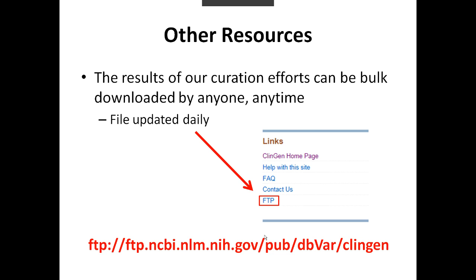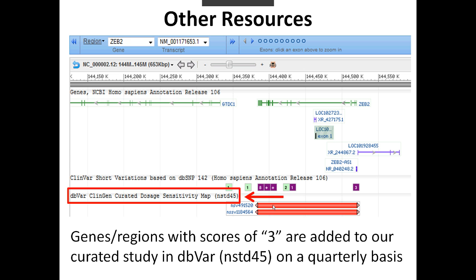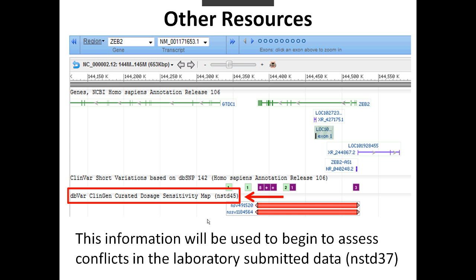This site also contains a link to an FTP site, which is updated daily and includes BED files that you can use in the browser of your choice. Additionally, on a quarterly basis, we take our genes and regions that have been given a score of 3 — either haploinsufficiency or triplosensitivity — and add it to a dataset in NCBI's DBVAR called ClinGen Curated Dosage Sensitivity Map, or NSTD45. You can use this information as a track in Variation Viewer at NCBI, which will be the focus of a separate webinar. We'll also use this information to begin to assess conflicts in the laboratory-submitted data, which is available in DBVAR under the name NSPD37.